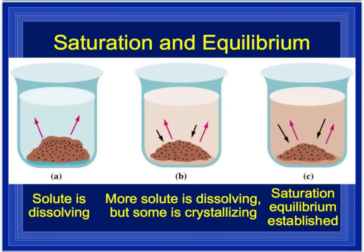A term we need to discuss is solution equilibrium. Initially, some solute moves up into solution. Over time, some particles fall back to the bottom, and saturation equilibrium is established — there's just as much going into solution as there is crystallizing out. The arrows are equally balanced: an equal amount is going into solution and an equal amount is crystallizing.